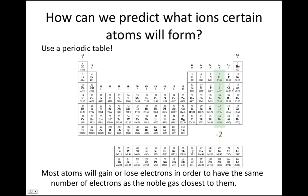These rules generally hold true for the four columns shown. Usually, atoms in the fifth group will form ions with a negative three charge, and atoms in the third group will form ions with a positive three charge. Now there's a whole bunch of metals here in the middle — these are known as transition metals, and often they can form ions with different charges, so we typically can't make any assumptions about these.